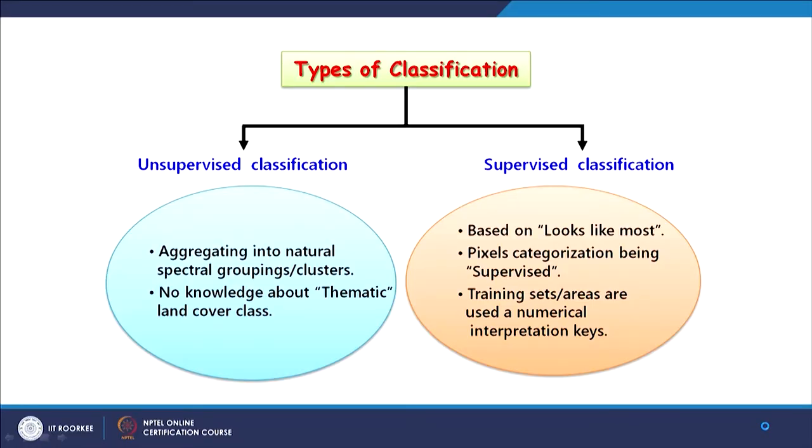The purpose of classification is to create from continuous image data a map that is better interpretable and easy to use by decision makers. Two techniques: unsupervised, which is fully computer-based with not much human intervention, and supervised classification, where human intervention is present at each step — especially for training sets, which is the most important thing, along with corresponding statistical characteristics and choosing an appropriate classification technique.